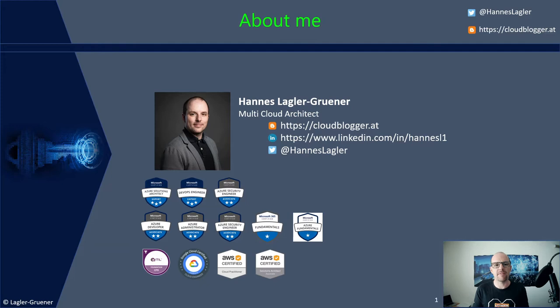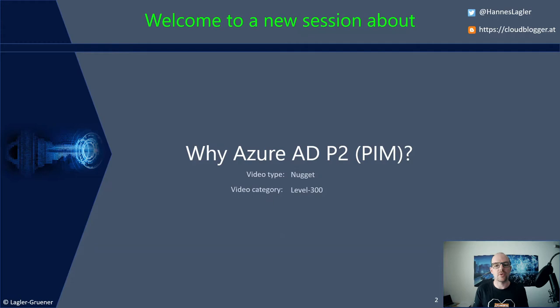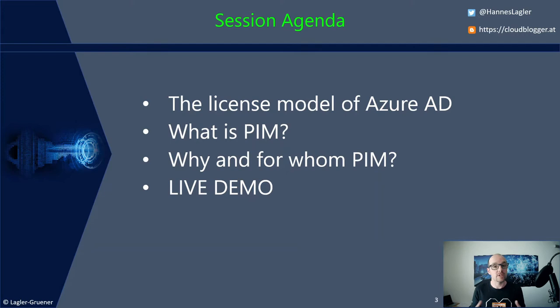Let's start with the topic for today. We talk about Azure Active Directory Premium 2, the Privileged Identity Management feature itself. This is from video type nugget and from video category level 300, so we are going deeper into technical details.